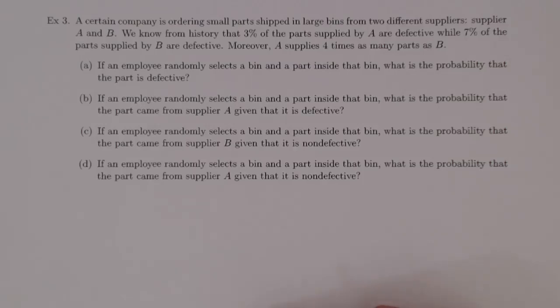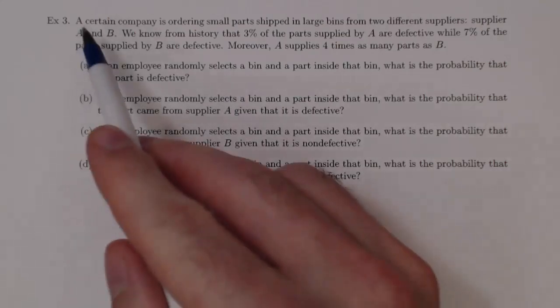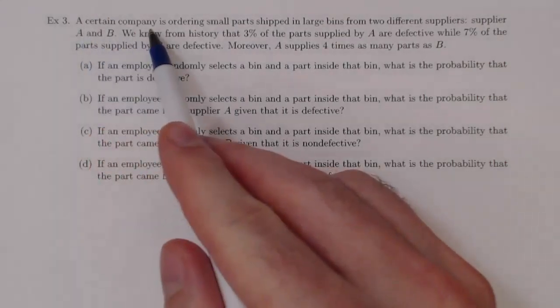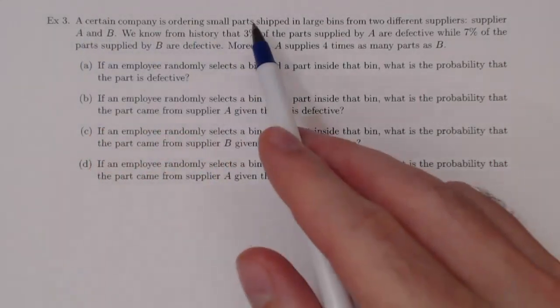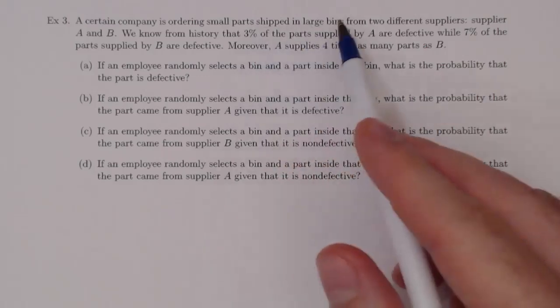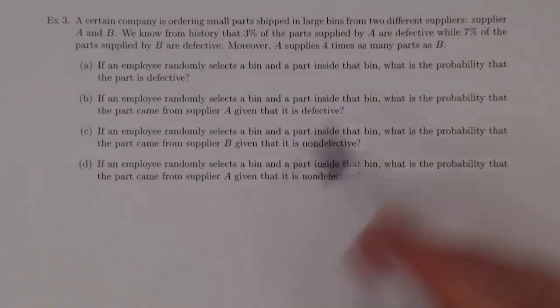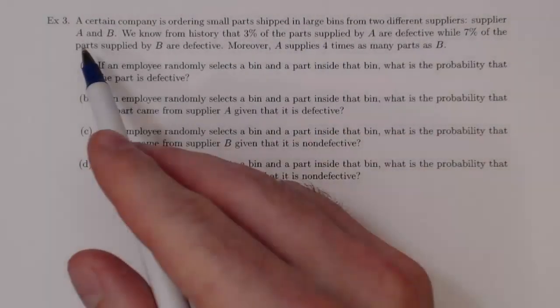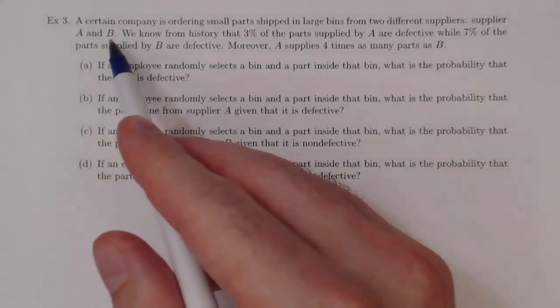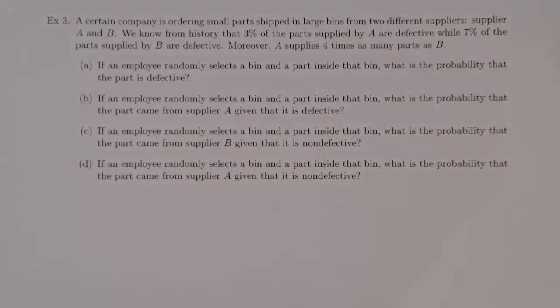This is our third and final example on conditional probability. A company is ordering small parts and they're shipped in large bins. There are two different suppliers: Supplier A and Supplier B.